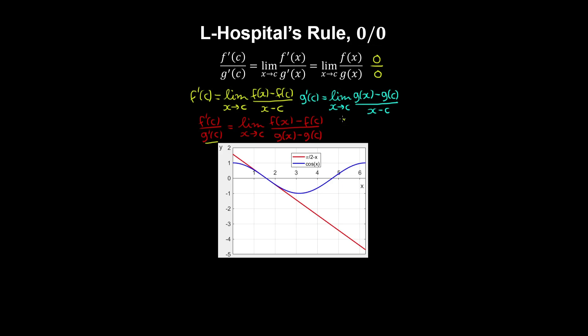Now for the special case where both f and g are both 0, then we can get rid of these terms. And now as x approaches c, we have a ratio of 0 on 0.